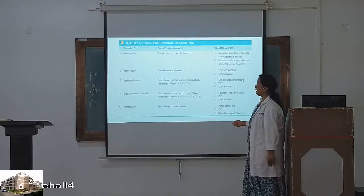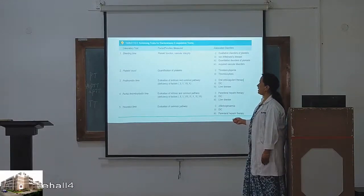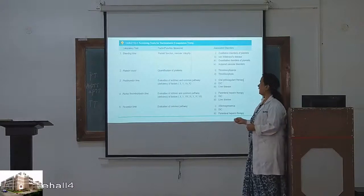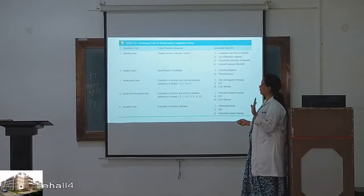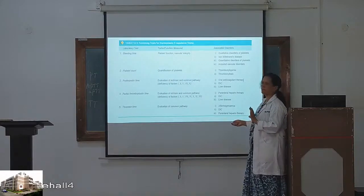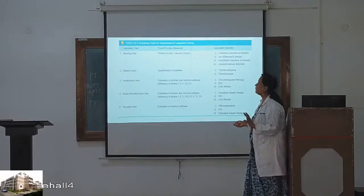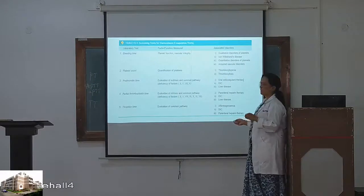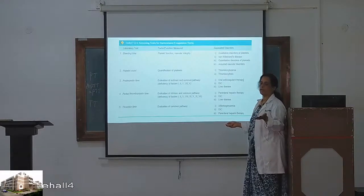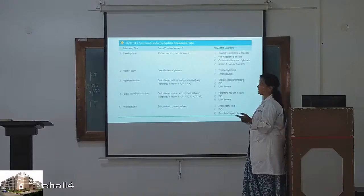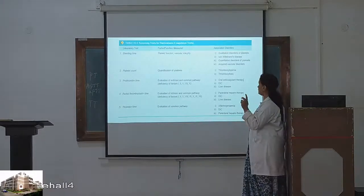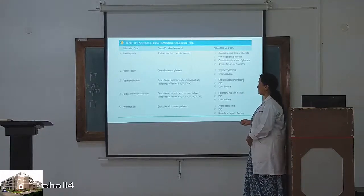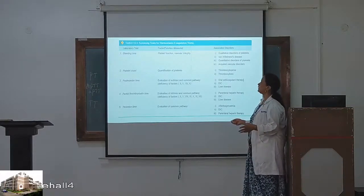Prothrombin time is for evaluation of the extrinsic pathway and common pathway. It detects deficiency of factors 1, 2, 5, 7, and 8. It is prolonged in oral anticoagulant therapy, DIC, and liver disease. Partial thromboplastin time (APTT) evaluates the intrinsic and common pathway.